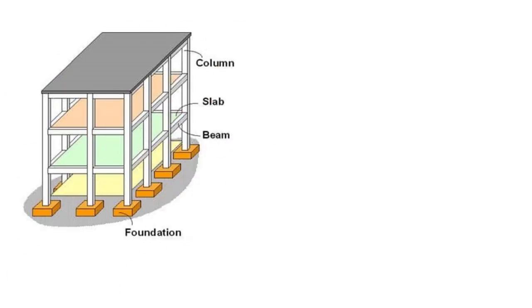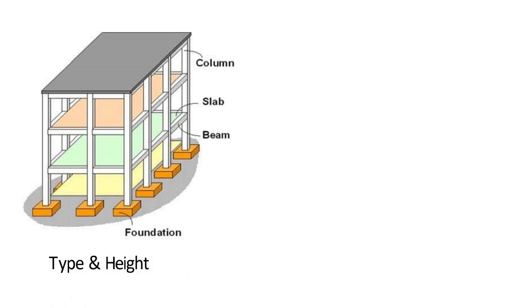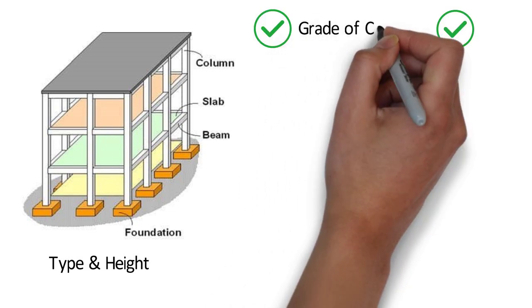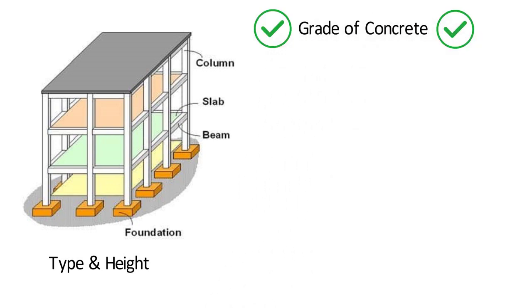Just take the case of a building. In a building, various structural elements are there, like footing, columns, beams, slabs, etc. Depending on the type and height of the building, the strength of concrete required for constructing these elements changes. So it is necessary to choose the correct grade of concrete for constructing a structure.